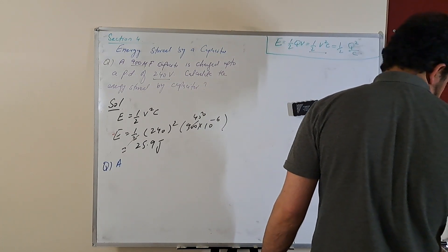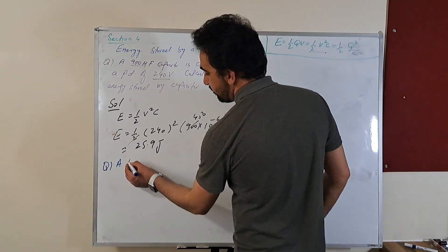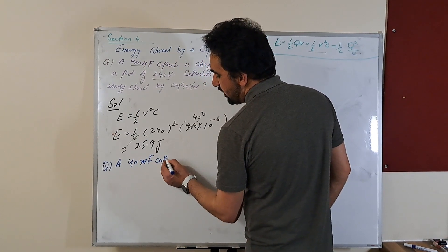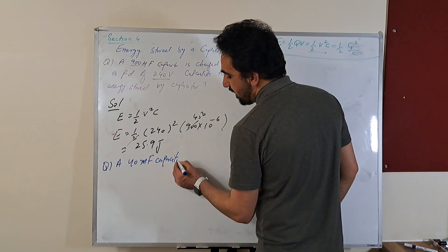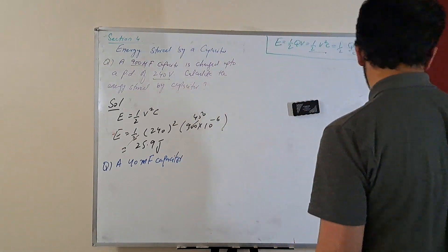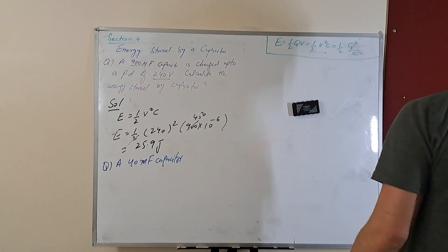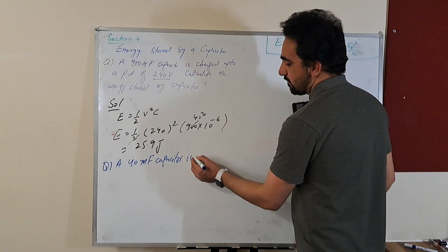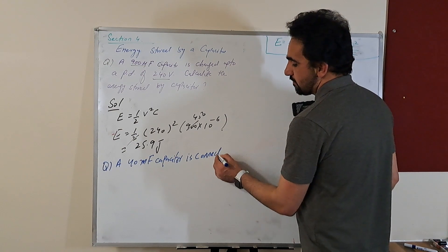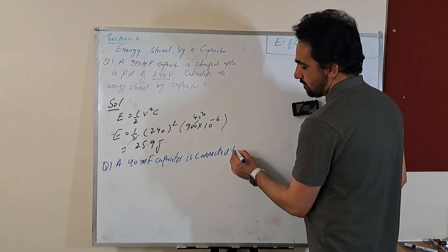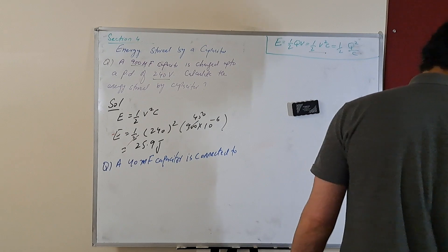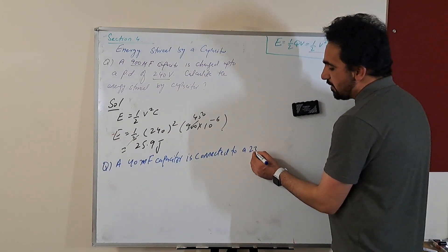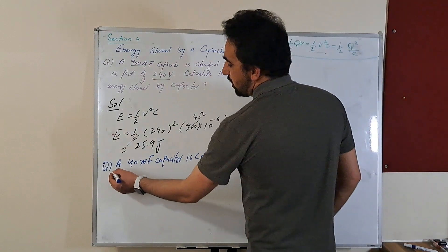A 40 microfarad capacitor... sorry, a 40 millifarad capacitor. Milli is 10 to the power minus 3 and micro is 10 to the power minus 6. A 40 millifarad capacitor is connected to a 230 volt power source.